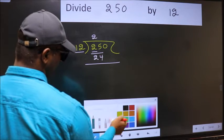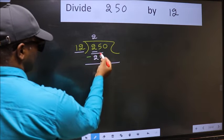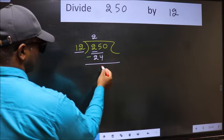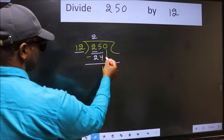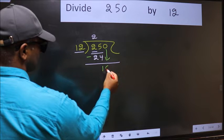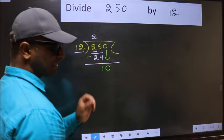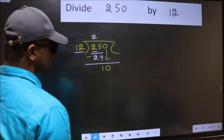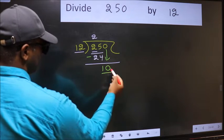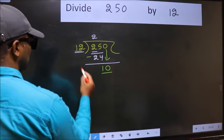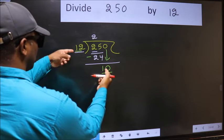Now we should subtract: 25 minus 24 equals 1. After this, bring down the beside number, so 0 down. After this step, the mistake happens. And the mistake is this: here we have 10 and here 12. 10 is smaller than 12.